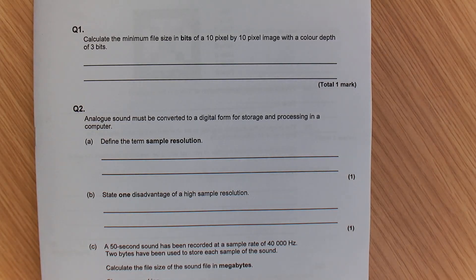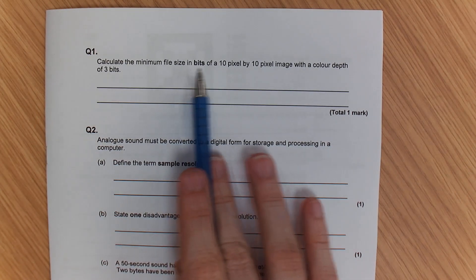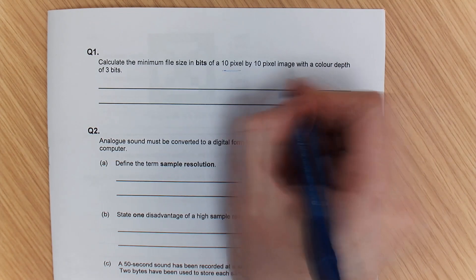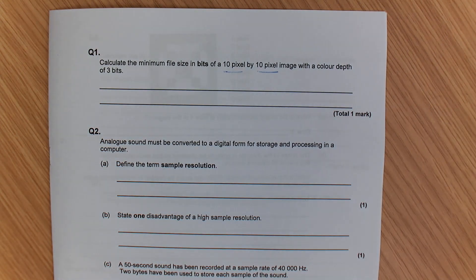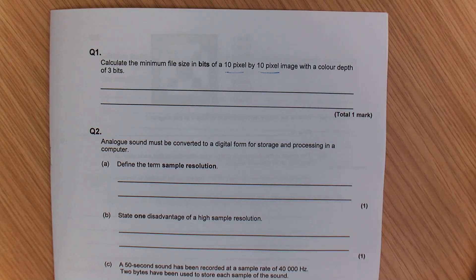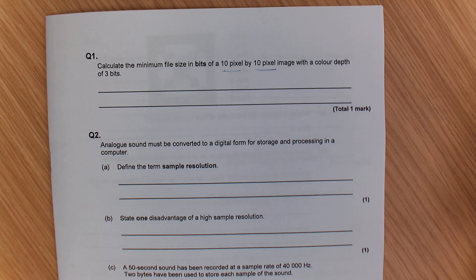Right, so what you've got in front of you are some questions that are getting you to think about the bits, bytes, kilobytes, terabytes, and so on. These are often questions that seem simple, but they trip people up when they misread them. So the first question here that we've got is to calculate the file size of 10 pixels by 10 pixels with a color depth of 3 bits, and it wants to know the maximum size that it could be.